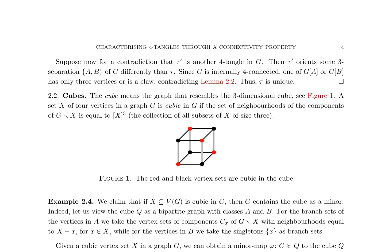The collection of all subsets of X of size 3 is relevant here. The cube graph serves as an example, where X is a bipartite set with classes A and B. The branch sets for vertices in A are the vertex sets of components C of G-X with neighborhoods equal to X minus one element, for each element of X. Similarly, the branch sets for vertices in B are singletons.